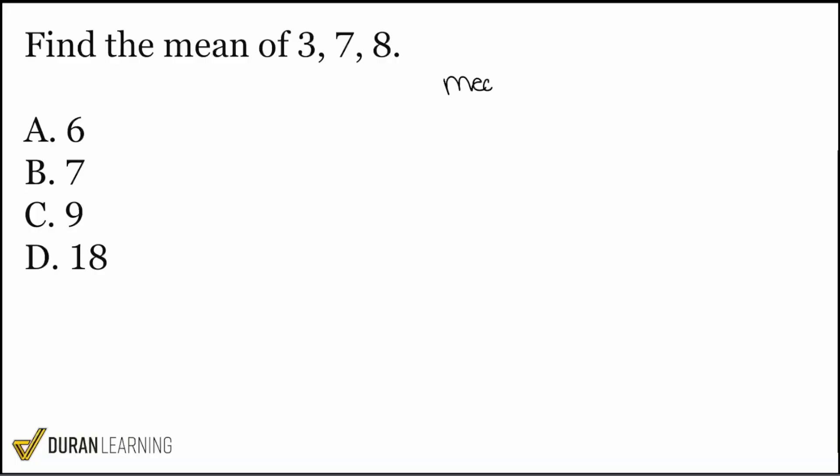So mean is going to equal 3 plus 7 plus 8 divided by the number of numbers, which in this case everybody is what again? The number of numbers in this case will be 3.